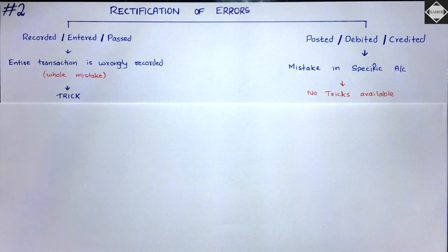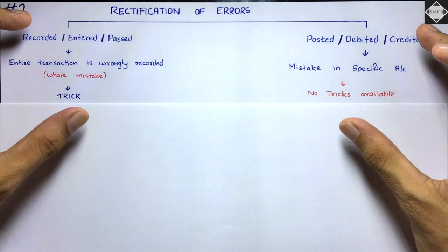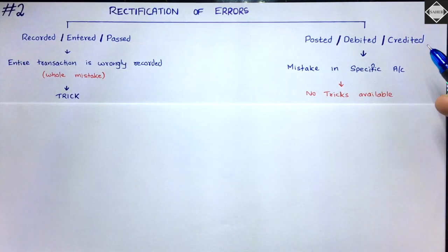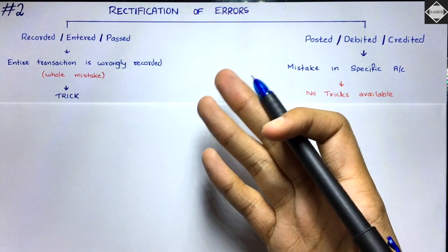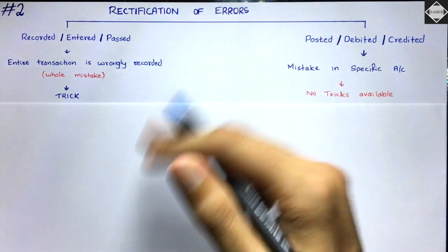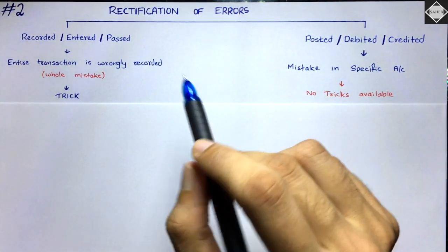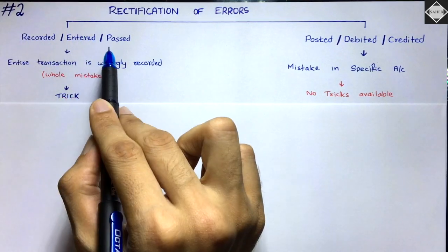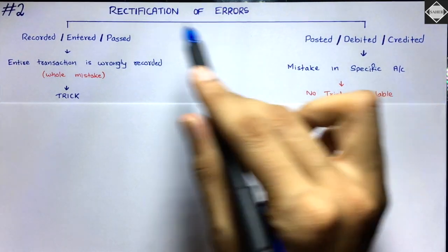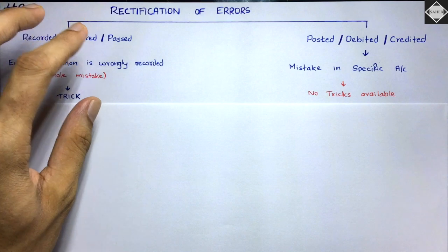To understand how to solve rectification questions, we are going to focus on two categories. The first uses the terms: recorded, entered, passed, posted, debited, credited. You may wonder what the basis of this classification is — it's very simple. If you go into the study material and look at the questions, you'll find most errors use these exact terms. So on the basis of how questions are worded, this categorization has been made.